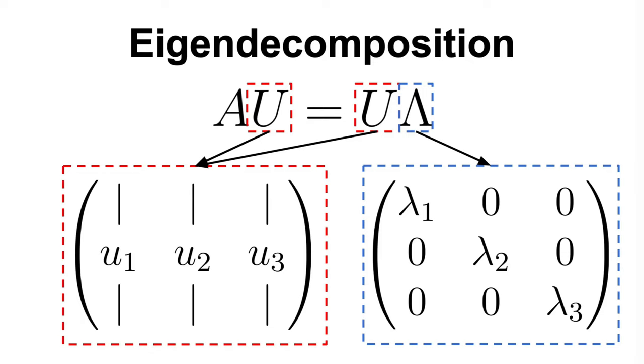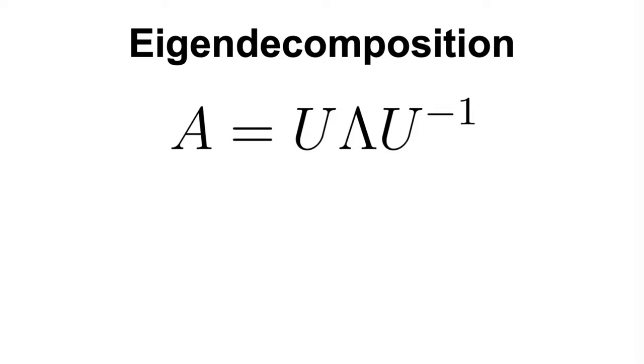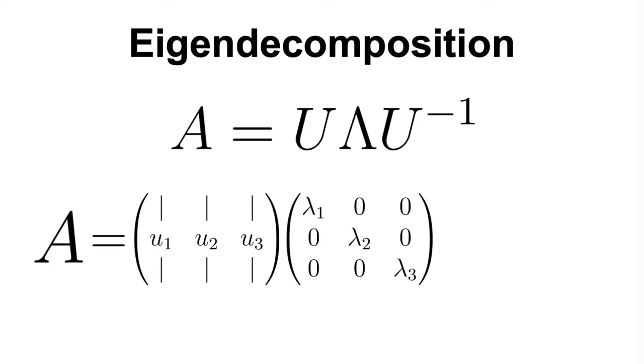Great! So, now we have A multiplied by U is equal to U multiplied by lambda. Finally, we just have to perform one more step to obtain the eigendecomposition of matrix A, which is multiplying by the inverse of U on the right. And here we have it, the eigendecomposition of matrix A. We have the eigenvector matrix U, multiplied by the diagonal matrix that contains the eigenvalues, multiplied by the inverse of U.